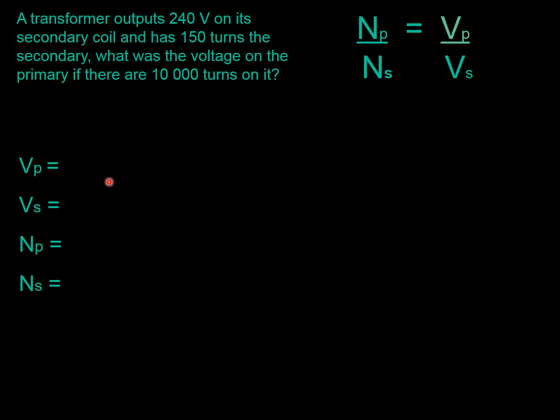There's the equation. Let's put those numbers in. Let's work them through. What is VP? VP is... What was the voltage on the primary? That's what we don't know. The S. That's the voltage on the secondary, or the potential difference on the secondary. Let's have a look. Oh, 240 on its secondary. So that's 240. NP. That is the number of turns on the primary. So, 10,000 turns. What was the voltage on the primary if there are 10,000 turns on it? So 10,000. And that leaves NS is 240. It outputs... Sorry, no, it's 150, isn't it? 150 turns.